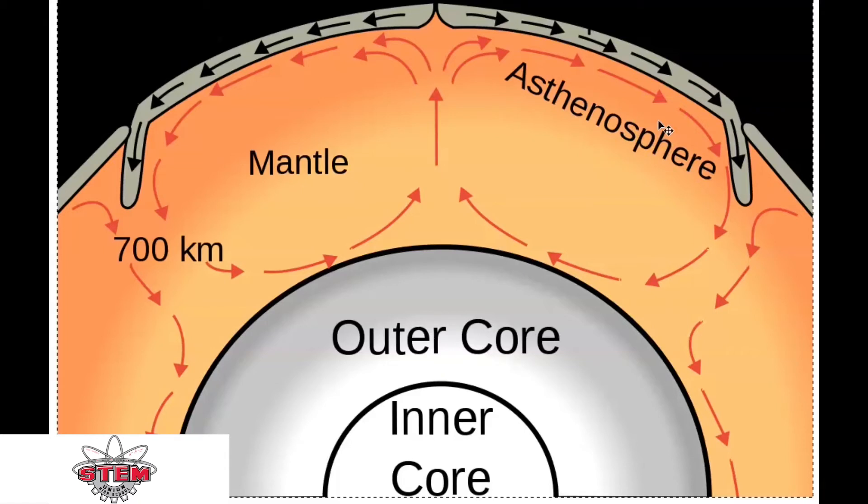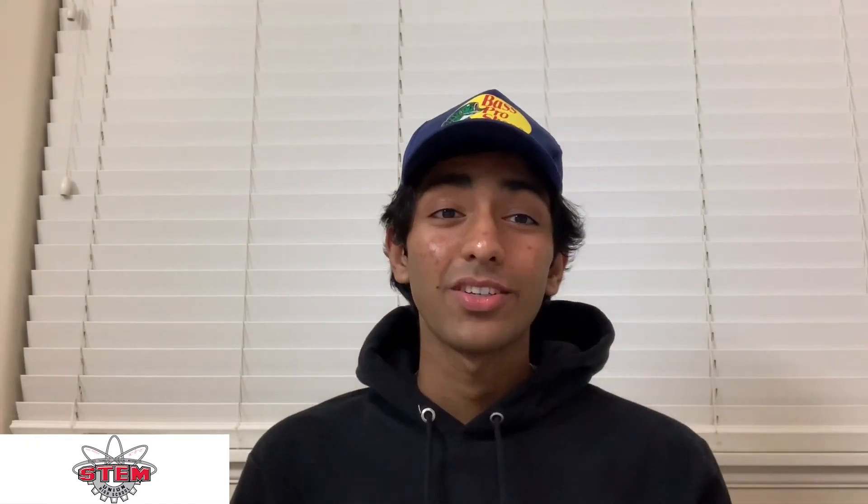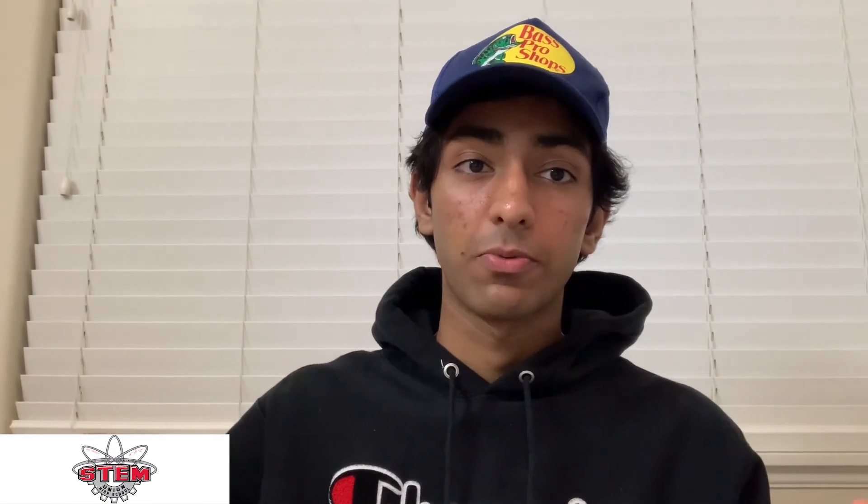These convection cells are so strong that they move the plates on the surface of the Earth. Now that you've learned a little bit about convection currents, let's demonstrate one. I'll be using two cups of cold water, a cup of hot water, and a tub of water to demonstrate a convection current.